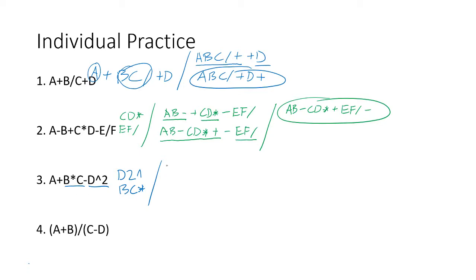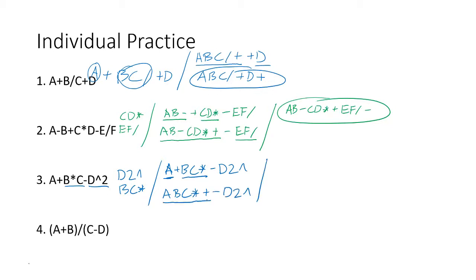So what I end up having is: a plus b c multiply minus d 2 exponent. A is my first operand, b c multiply is my second operand, giving a b c multiply plus, then minus d 2. A b c multiply plus is my first operand, d 2 caret is my second operand, yielding a b c multiply plus d 2 caret minus.